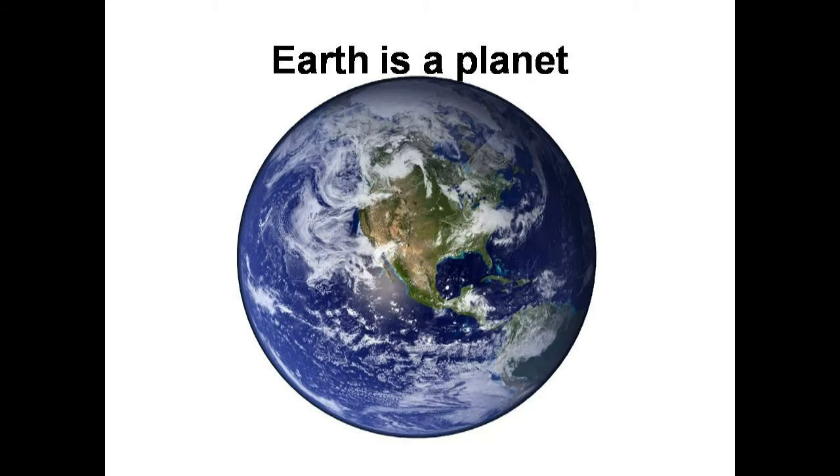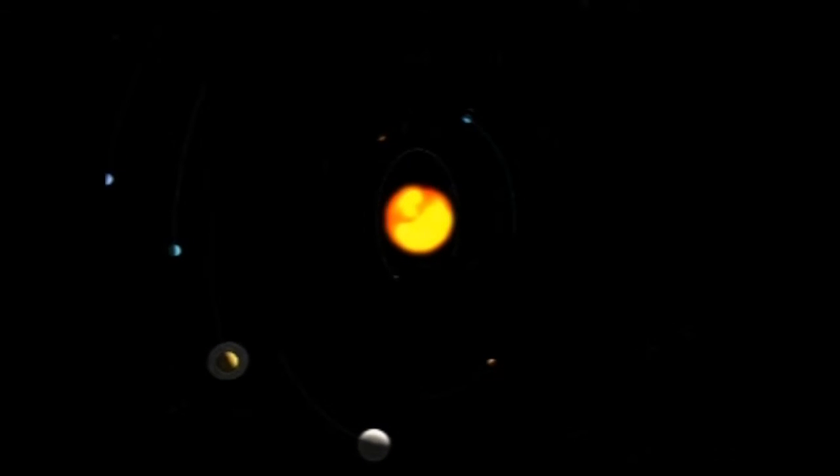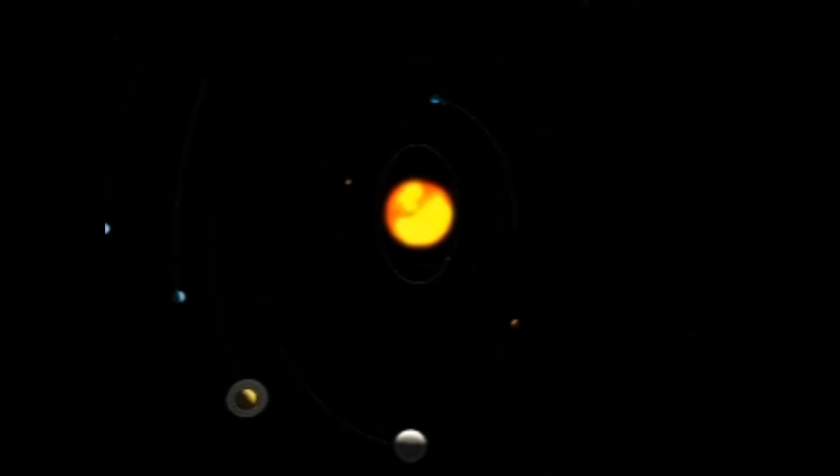And what is a planet? A planet is like a ball that is moving around a star and doesn't have its own light. Earth is moving around the sun, which is a star, and planet Earth doesn't have its own light. We get light from the sun.